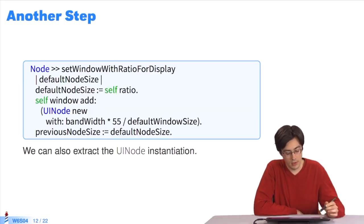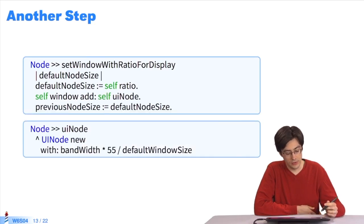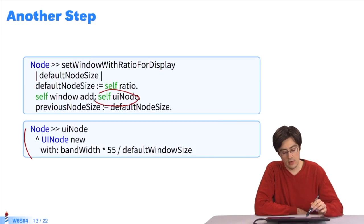Another possible method is to extract this part here, so that the subclasses can change this behavior. I extract this piece of code into a specific method. And in the primary method, I send a message.